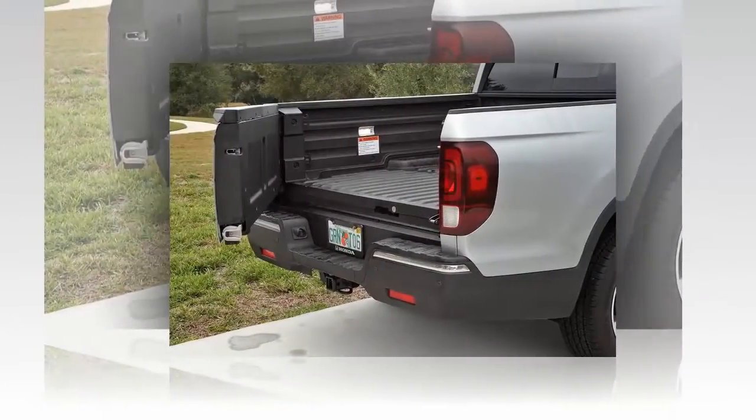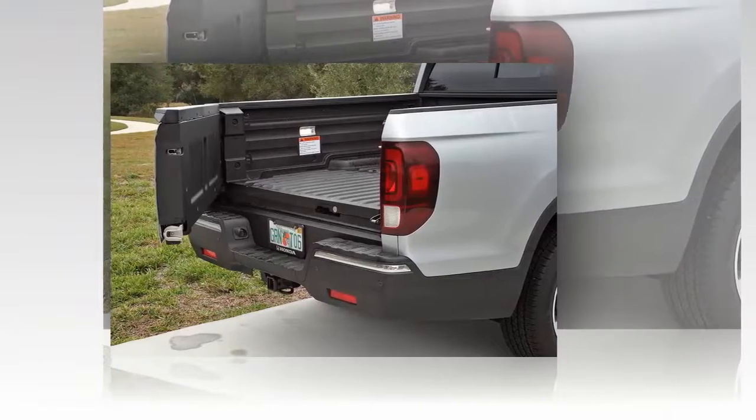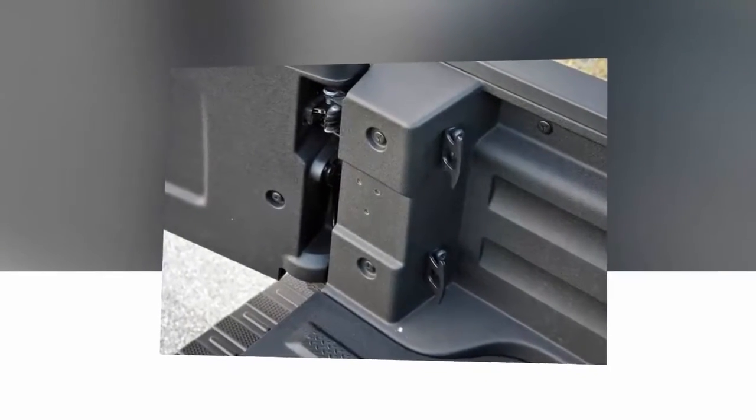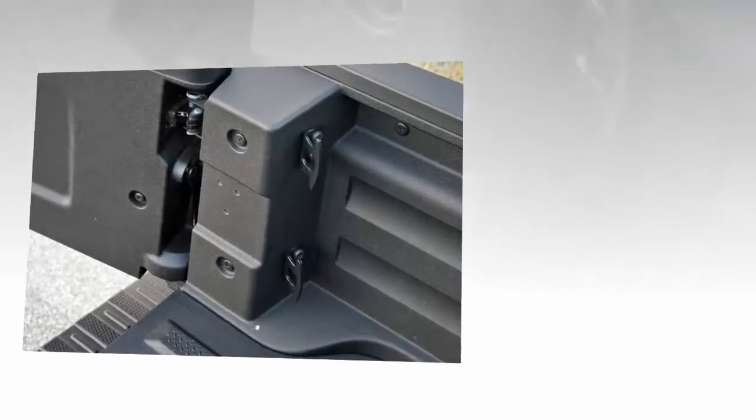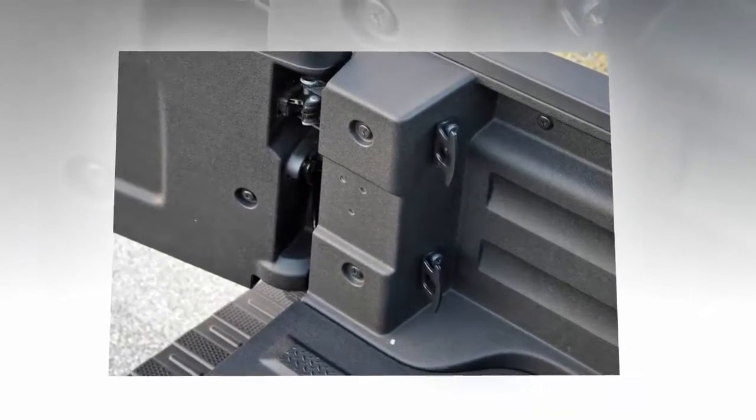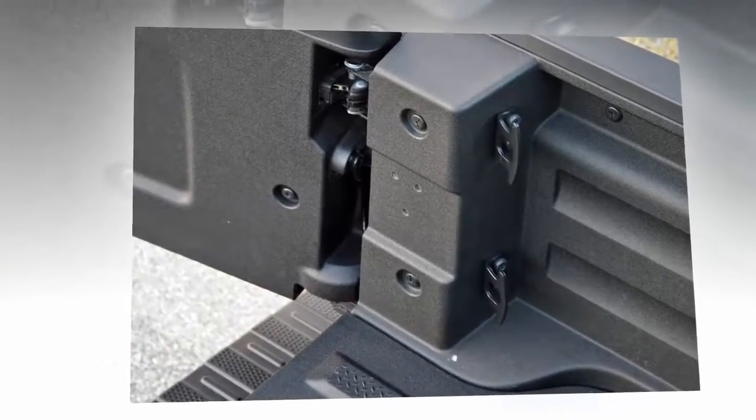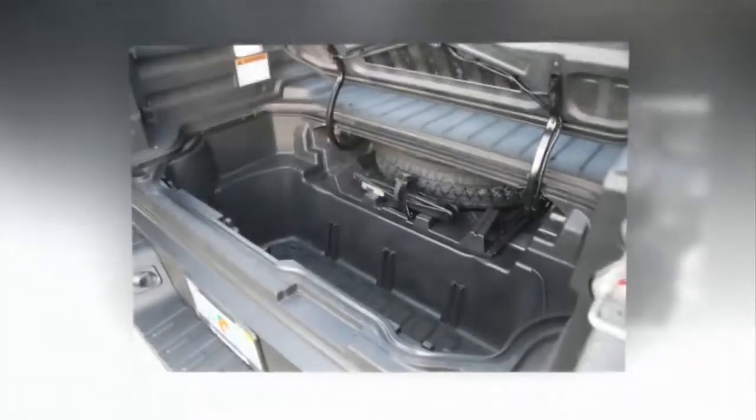Next, there is the in-bed trunk. Swing open the dual action tailgate and the electronic latch for the in-bed trunk is exposed. Simply lift up on the handle and the rear quarter of the cargo floor raises up to reveal a rather deep cargo hold. This watertight compartment is perfect for luggage, tools, sports equipment, or other loose stuff you want to keep dry.